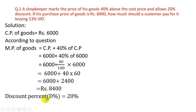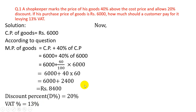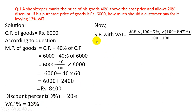Discount percent D% = 20%. VAT percent = 13%. Now we know that SP with VAT is equal to MP × (100 − discount%) × (100 + VAT%) ÷ (100 × 100), using the formula for SP with VAT.